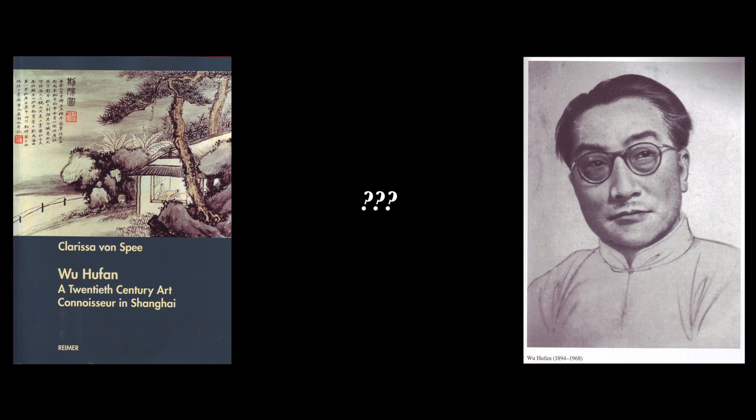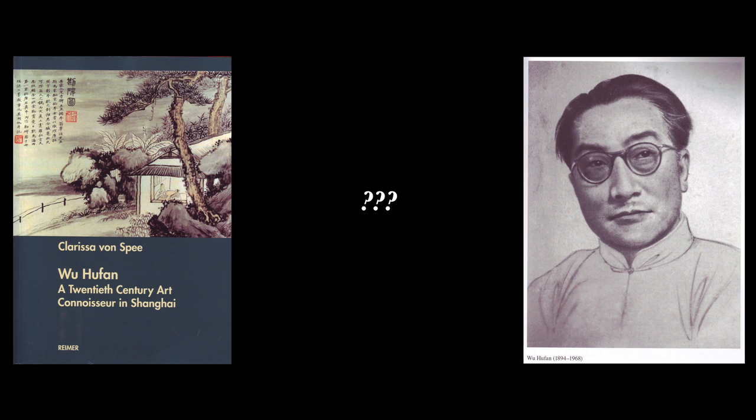In the 1930s, the highest level of connoisseurship and collecting was represented by the great collector-connoisseur Wu Hu Fan and his disciples in Shanghai. He's the subject of a fine book by Clarissa von Spey titled Wu Hu Fan, a 20th Century Art Connoisseur in Shanghai, Bruin 2008. Here's a photo of Wu Hu Fan from her book. Born in 1924, he died in 1968 before I could go to China, so I never knew him, except by reputation.